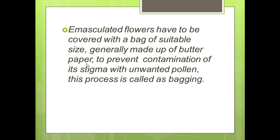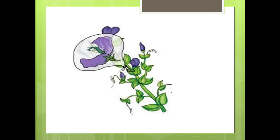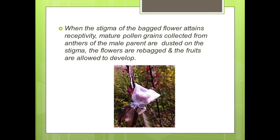A tag is attached with details such as date, date of emasculation, the variety of flower, etc. If the female parent produces unisexual flowers, there is no need for emasculation. The female flower buds are bagged before the flower opens. When the stigma becomes receptive, pollination is carried out using the desired pollen and the flowers are re-bagged.